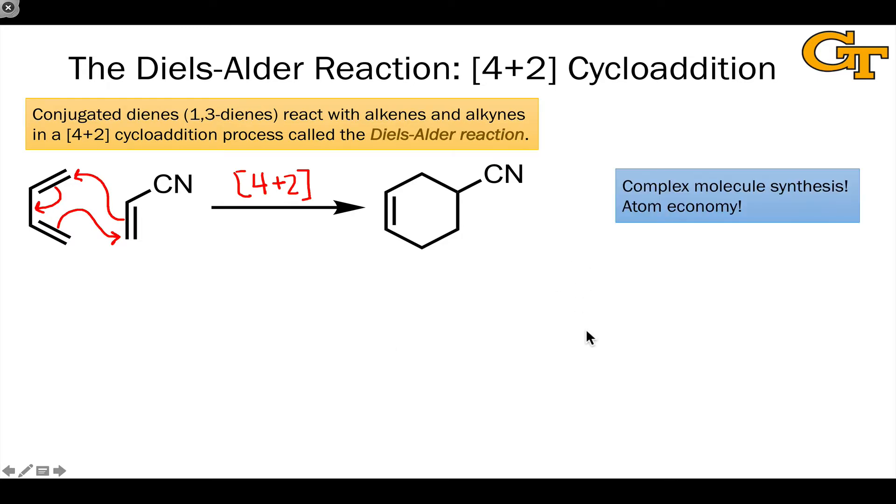What makes the Diels-Alder reaction so great? Well, first of all, we get complex molecule synthesis from this reaction. We're bringing two substrates together to form one substrate and forming two sigma bonds at the same time. And I've talked a lot about how that's a great synthetic advantage.